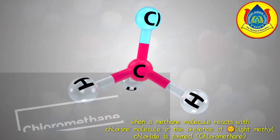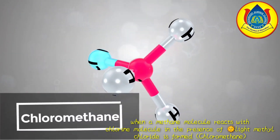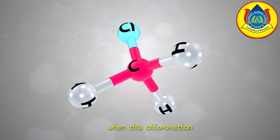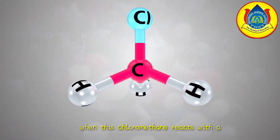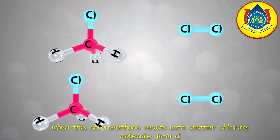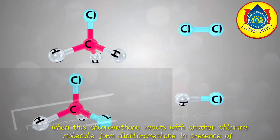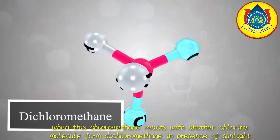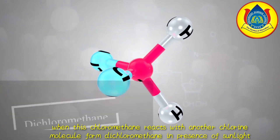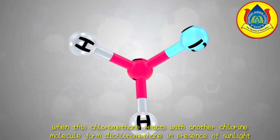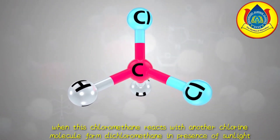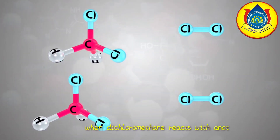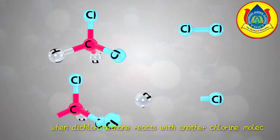This chloromethane again reacts with another chlorine molecule to form dichloromethane. Dichloromethane again reacts with another chlorine molecule in presence of sunlight to form trichloromethane, which is also known as chloroform.